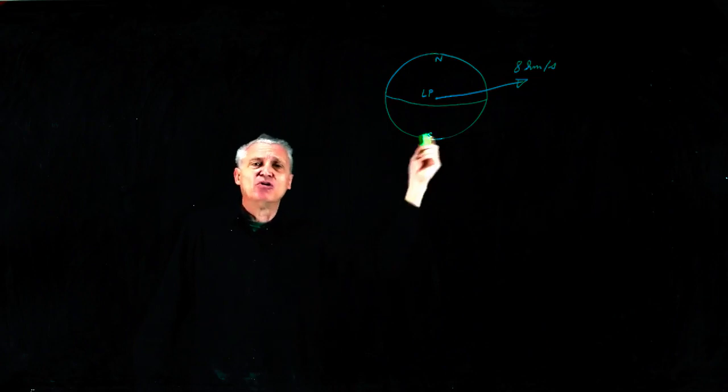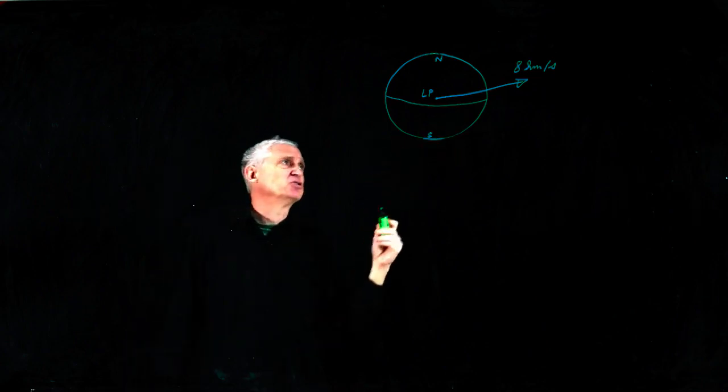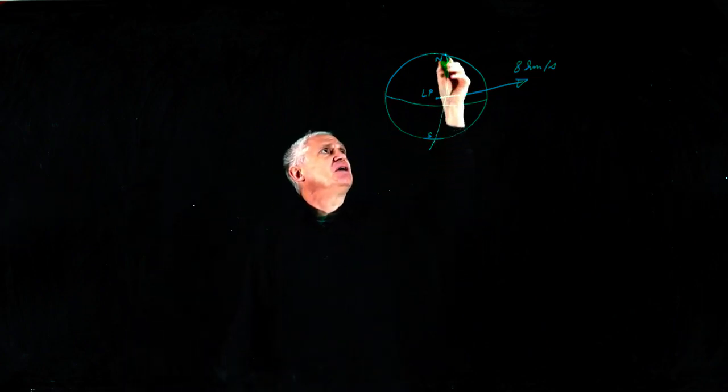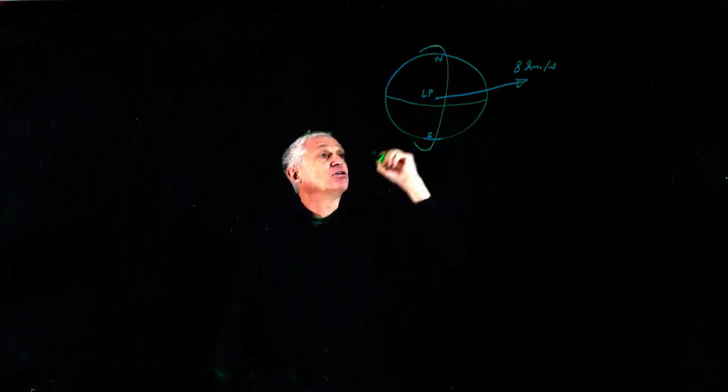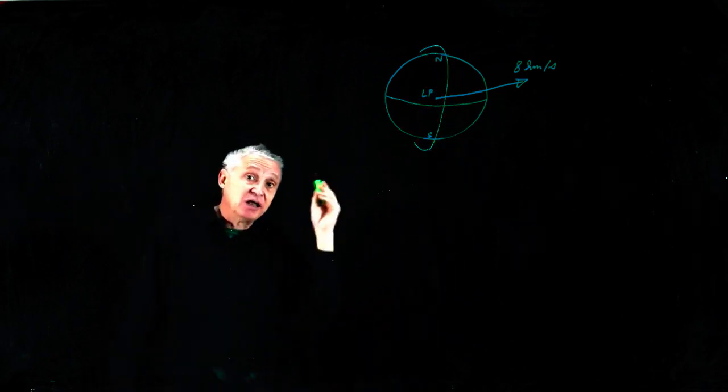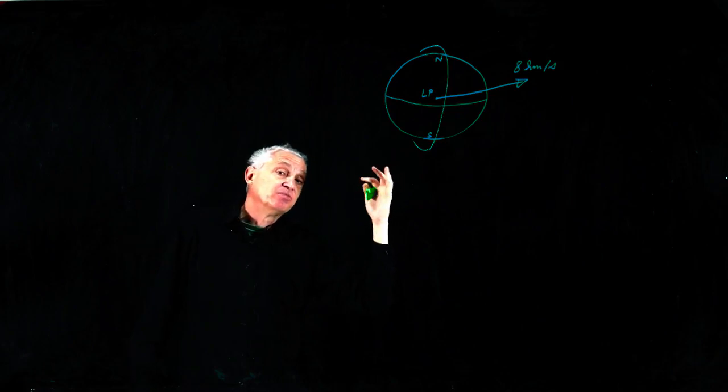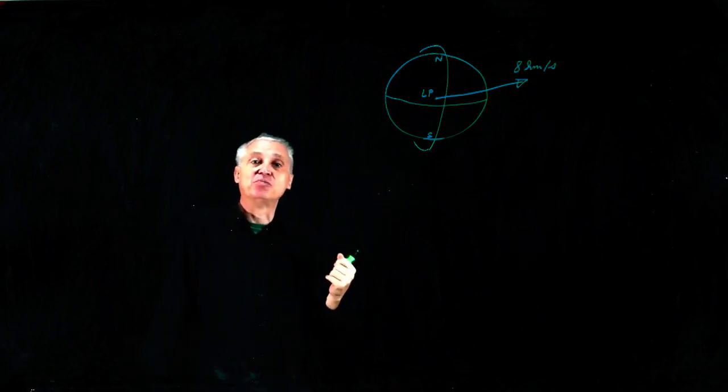We can go with a low orbit for science. We can go to an inclined orbit for Earth observation, navigation, or telecommunication, with the Earth turning under the orbit.